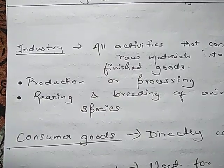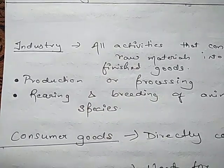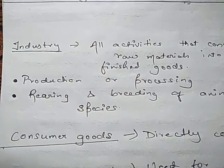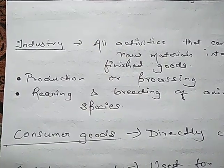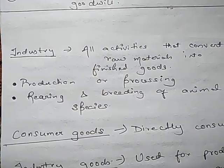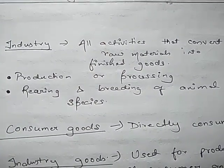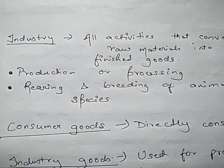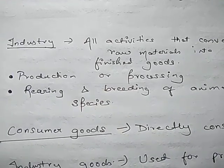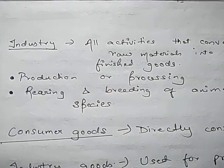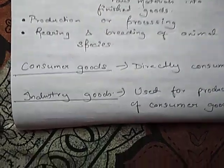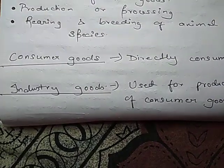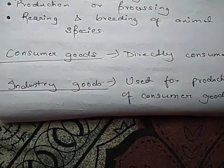Industry involves production and processing — we either produce or process raw material to get a new product, or we also do the rearing and breeding of animals. These are the two sub-types of industry. But first, you need to understand what goods are — goods are physical and tangible objects that industry produces.